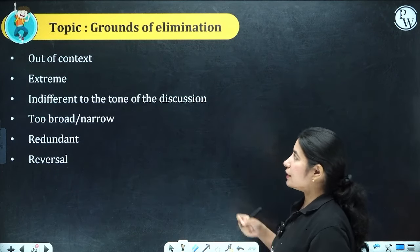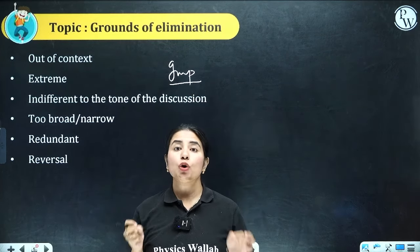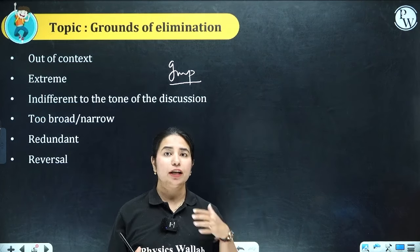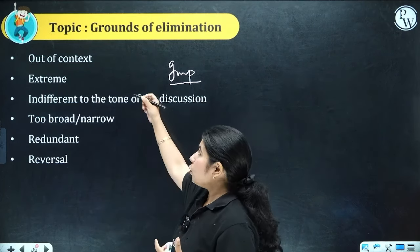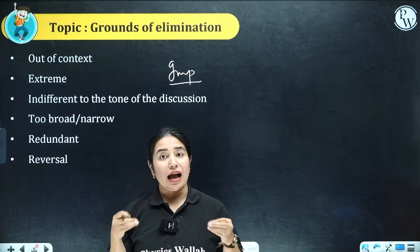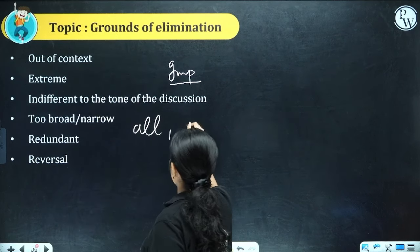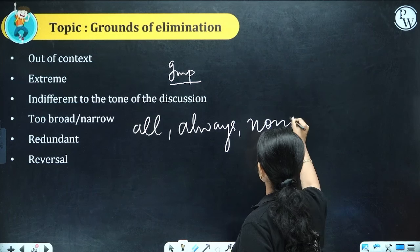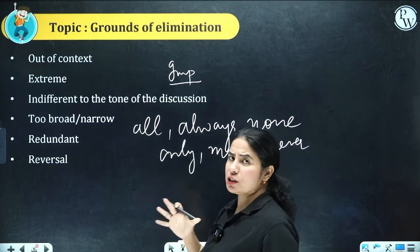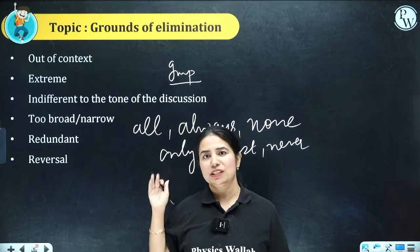The next point is grounds of elimination. Please note this down and revise before the exam. Grounds of elimination means eliminating incorrect answer choices. Trap answer choices can be created in several ways. First: out of context — the answer should be in sync with the perspective of the argument. Second: extreme answers — words like all, always, none, only, must, never — be suspicious of these choices, as extreme answers are usually not appreciated.